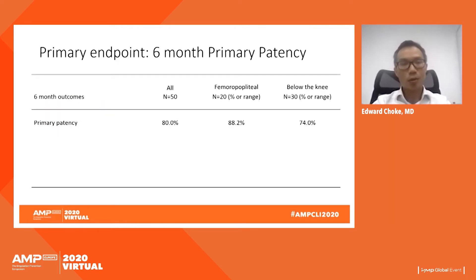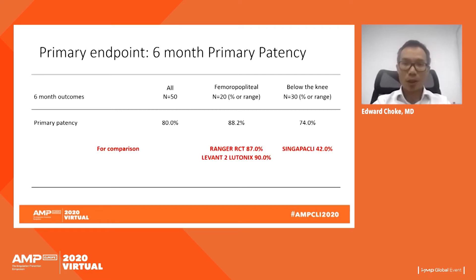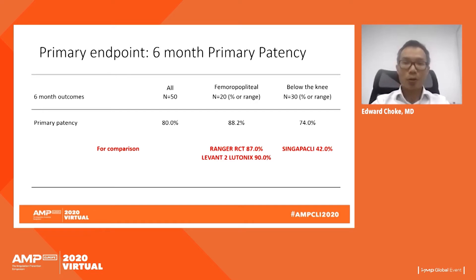The key result: six-month primary patency for the whole group was 80%. For the femoral-popliteal subgroup it was 88%. For comparison, the Ranger RCT six-month primary patency with paclitaxel DCB was approximately 87%, and Levant/Lutonix RCT was approximately 90%. So the ECSTASY six-month primary patency of 88% was quite comparable to paclitaxel drug-coated balloons, though these are different trials with different designs — this is a generalized gauge of efficacy.